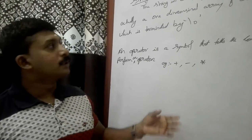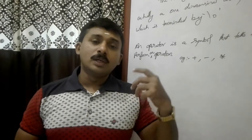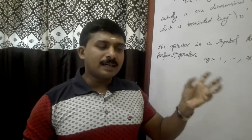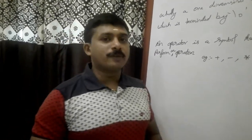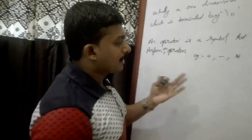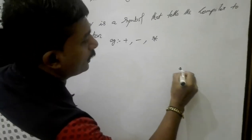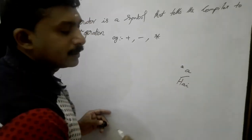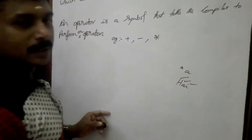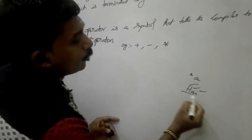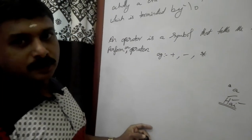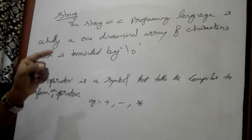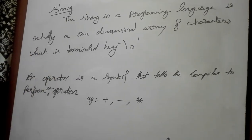The next token type is string. A string in C programming language is actually a one-dimensional array of characters which is terminated by a null character (slash zero). We can take strings as a separate topic.